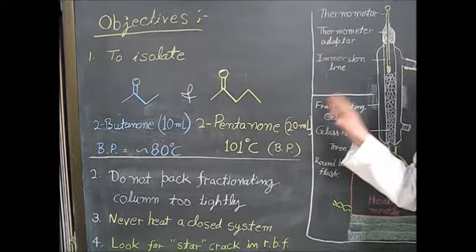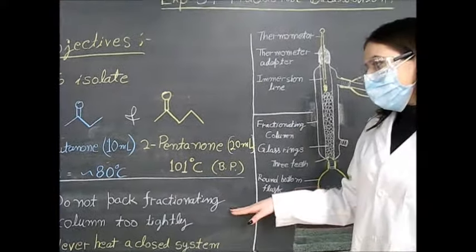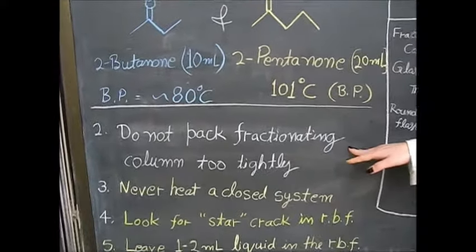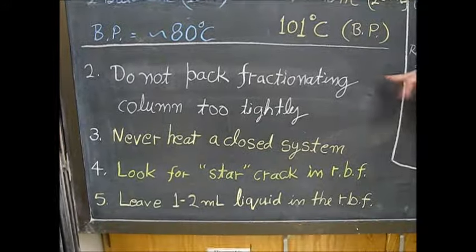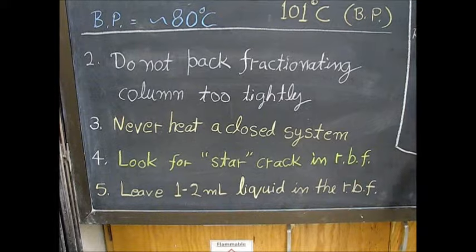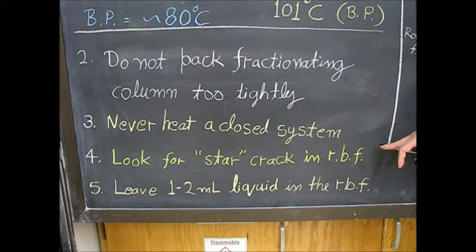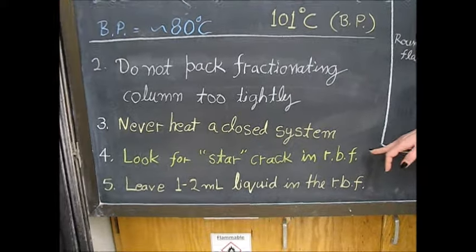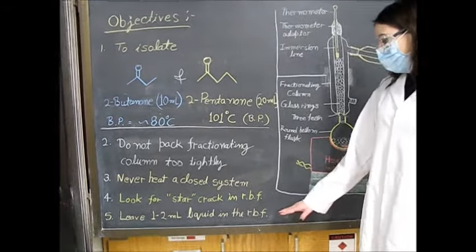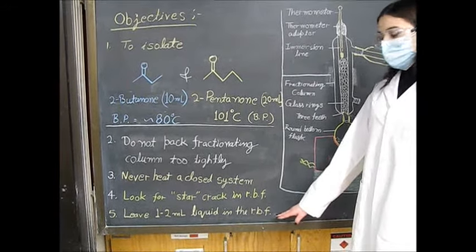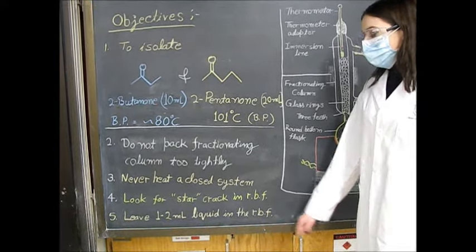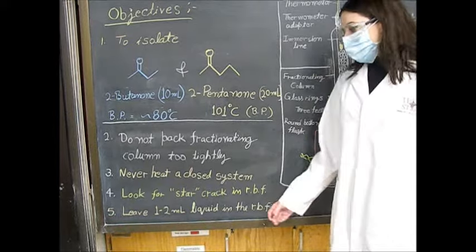A few safety tips for this lab: we don't want to pack our fractionating column too tightly, because that could potentially create a closed system, which we never heat. Before you start, check your round-bottom flask for any cracks or star cracks. Towards the end of the experiment, make sure to leave about 1-2 milliliters of liquid in the round-bottom flask to prevent burning residue into the glassware.